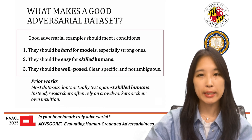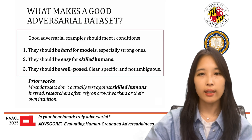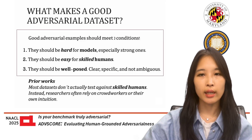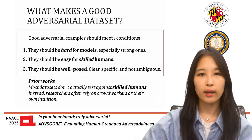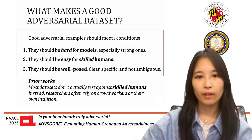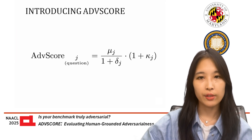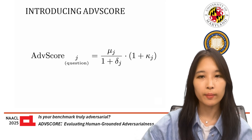However, there's a key ingredient missing in much of the prior work. Most datasets don't actually test against humans, and those that do test with humans don't use skilled humans. Instead, researchers often rely on crowd workers or their own intuition. That makes it hard to say if we're really making progress in benchmark construction. So we introduced ADVScore to measure these three components, building on item response theory IRT, a psychometric tool designed for standardized testing and increasingly used in NLP.